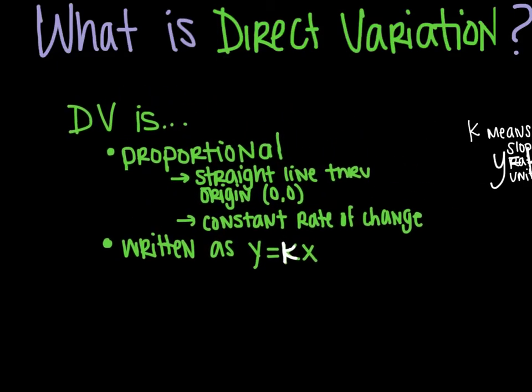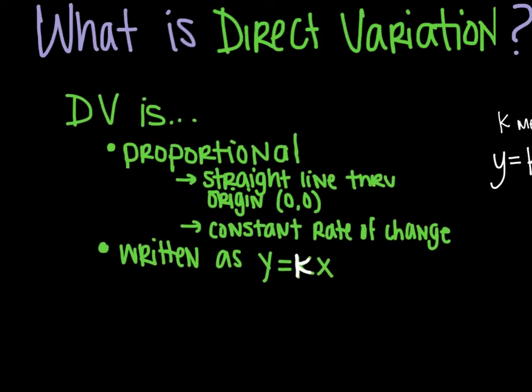Before we can do anything with direct variation equations, we have to know what direct variation actually is. It is proportional, which you have already learned means it is a straight line that goes through the origin. Those are two key things: it has to be straight and it has to go through the origin, and there is a constant rate of change. In other words, your slope is consistent throughout.